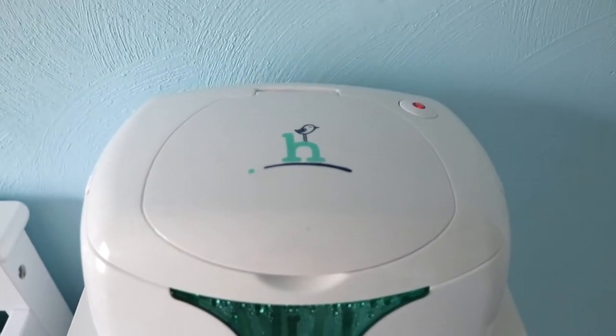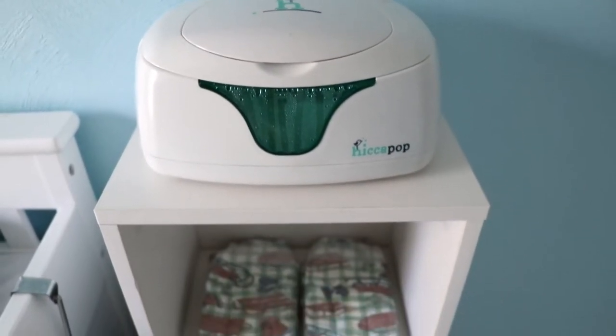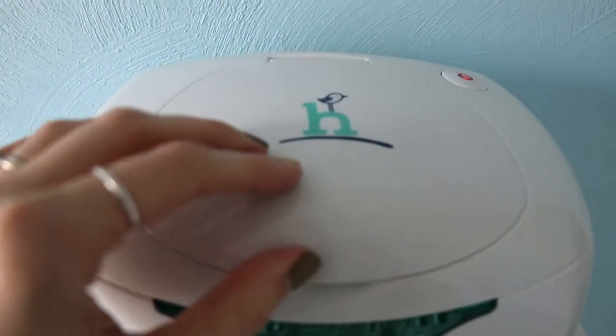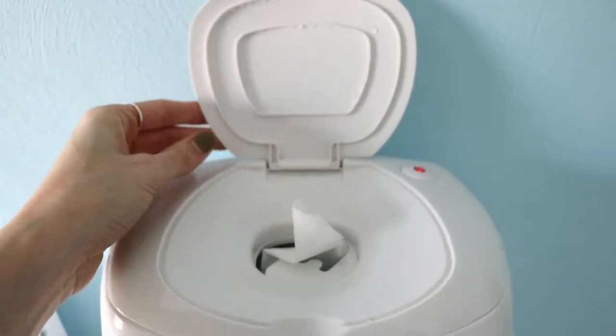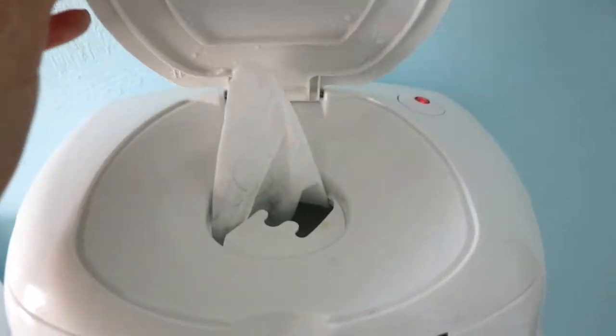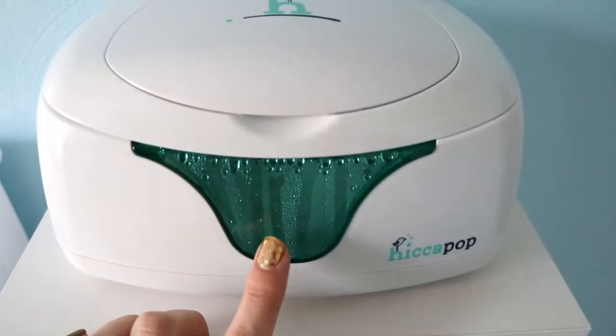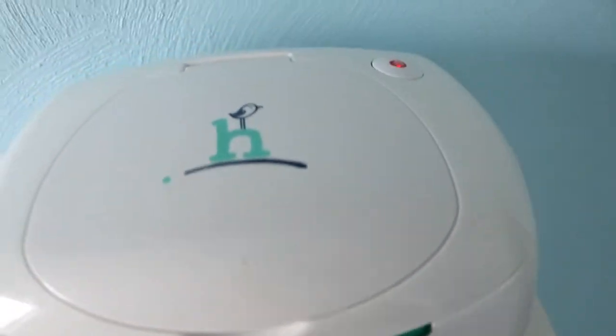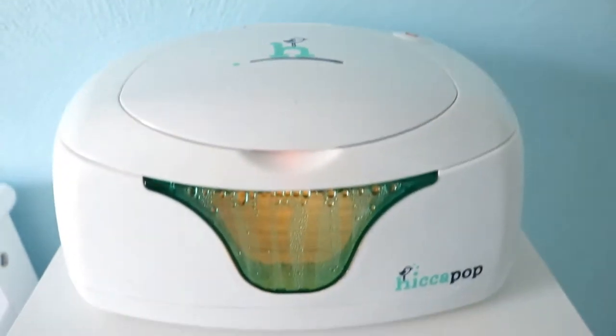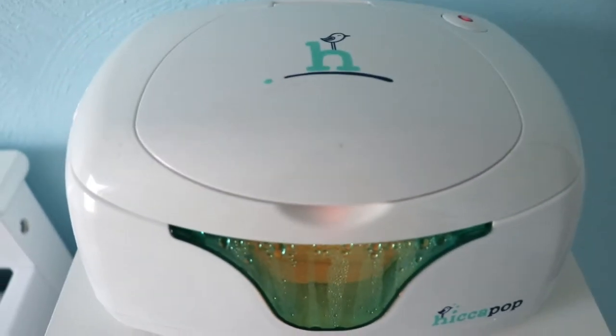First in this category is, is controversial and it is the wipe warmer. I think this is a must have because my baby was born in January and it is cold and these little wipes are so cold on a warm little region. So I think this is a must have. It has a little window that you can see the number of wipes that remain and a little nightlight on it. So I recommend this one by Hiccupop again on Amazon, but I know this is not a must have for everyone.